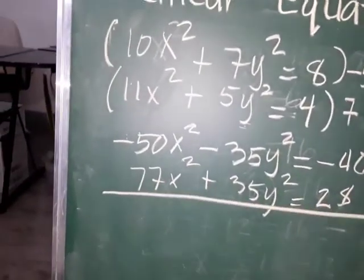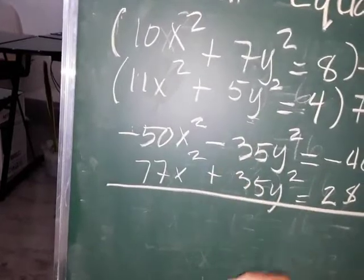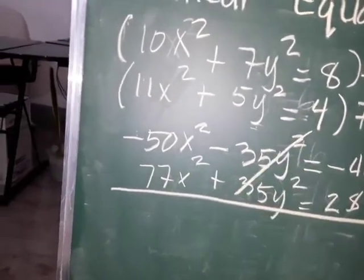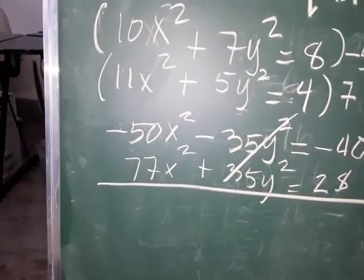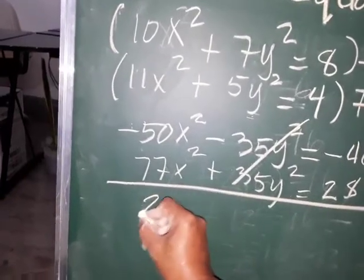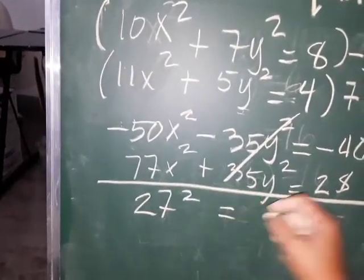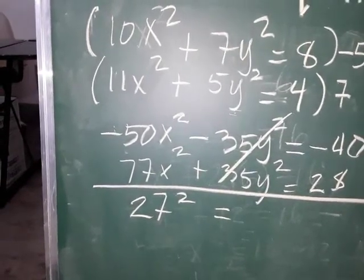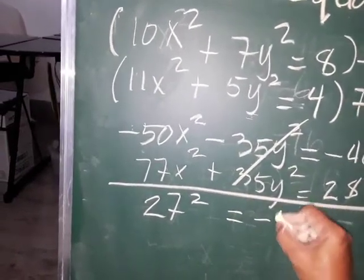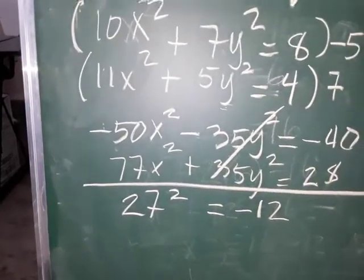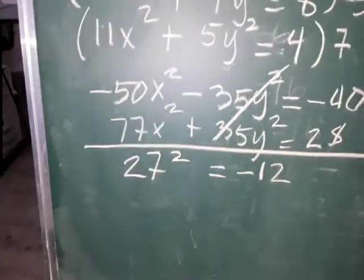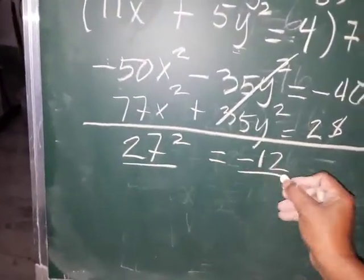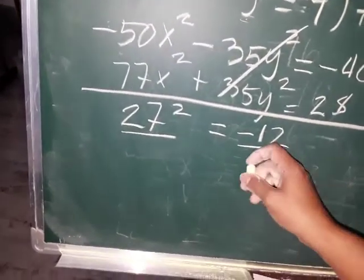Proceed to addition. The y squared terms have the same coefficient but unlike signs, so they cancel. Then negative 50x squared plus 77x squared gives 27x squared, equal to negative 40 plus 28, which is negative 12. This result may be a fraction. It is divisible by 3: 27 divided by 3 equals 9.